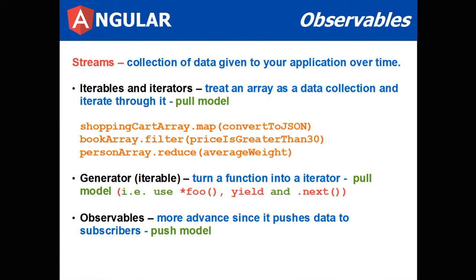Streams are a collection of data given to your application over time. There's different streams that we work with. We work with iterables and iterators. These treat an array as a collection of data that you can iterate through with a pull model.